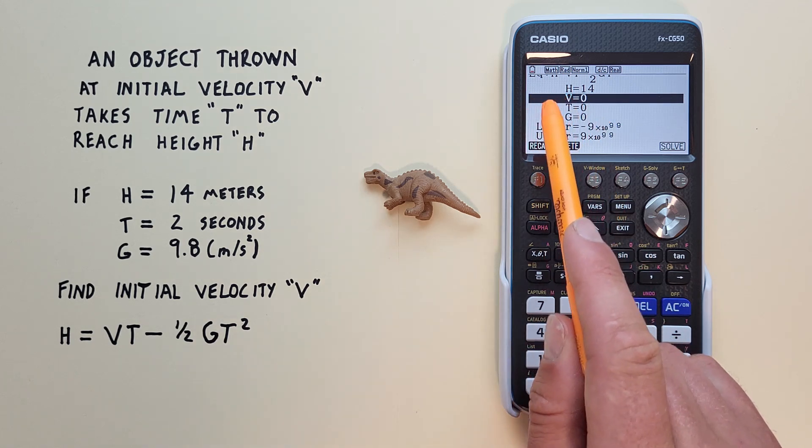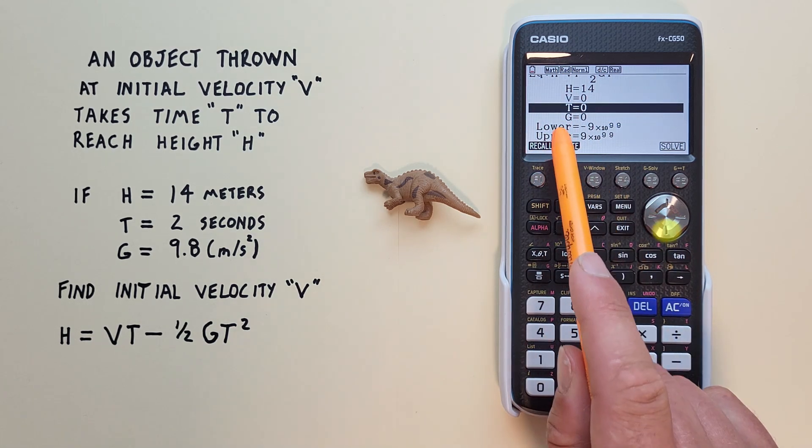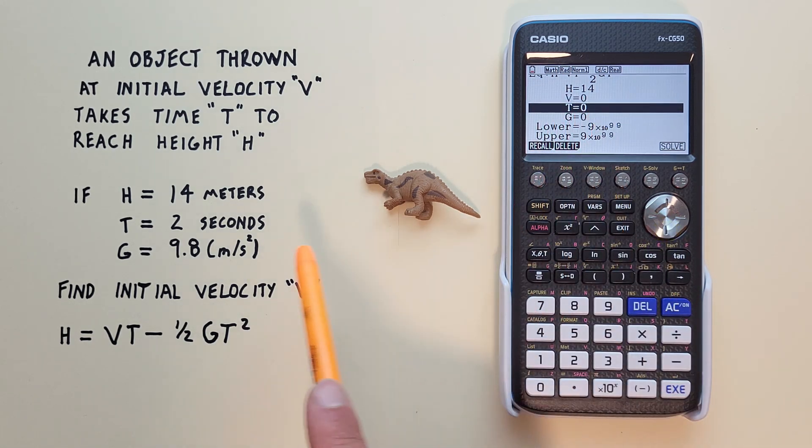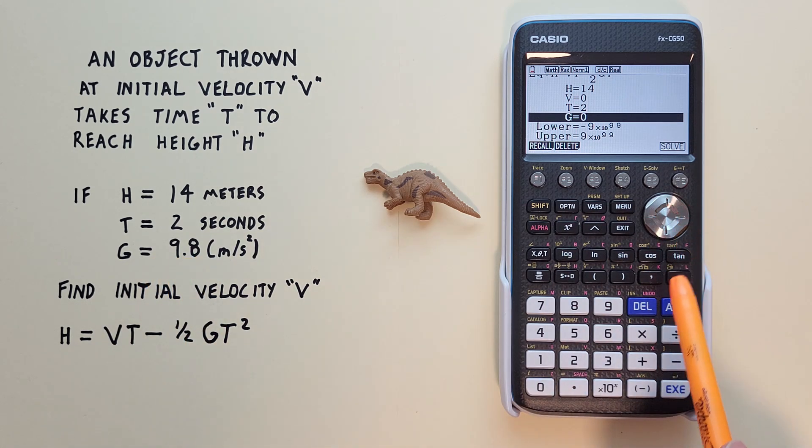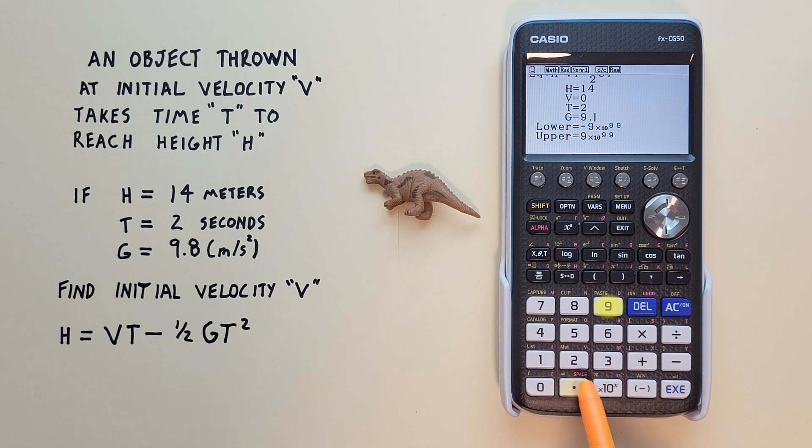Again, V is our unknown, so we'll leave that blank. Scroll down to T, which is 2. And our G is 9.8. There we go.